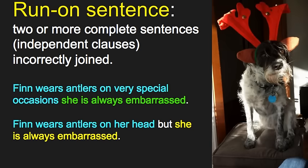Let's put some colors to it so it makes more sense. Here's our fused sentence — two sentences, one in blue and one in green, with nothing joining them. That's a run-on. Or, if they're incorrectly joined: here we have a joining word, a conjunction, but there's no comma.